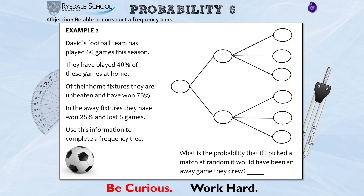The total number of games is 60. The two initial branches represent home fixtures and away fixtures. They have played 40% of their games at home: 10% of 60 is 6, times 4 is 24 home games. Since these branches must add to 60, there must be 36 away games.